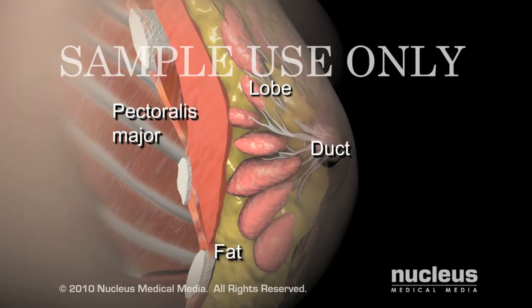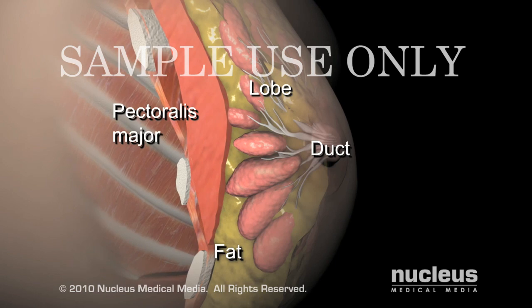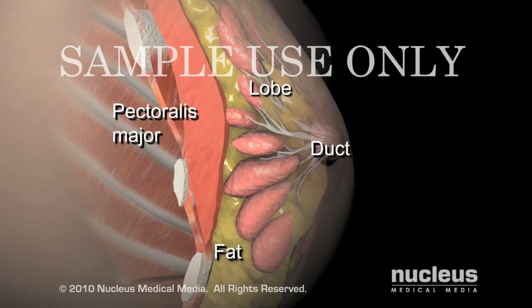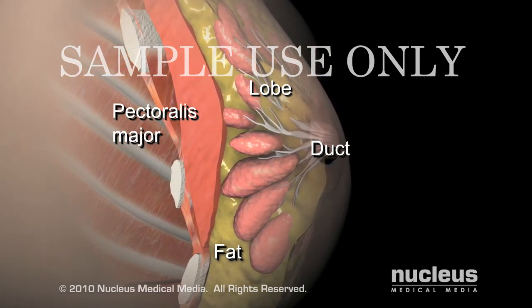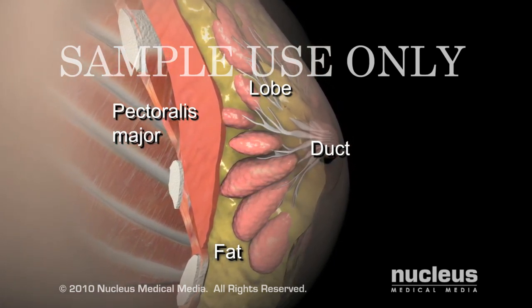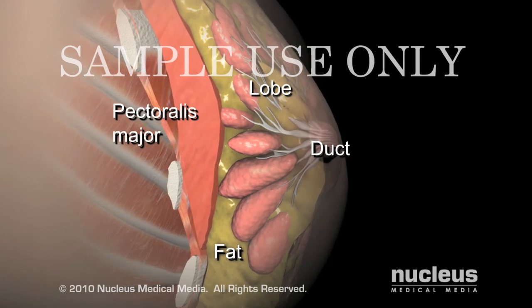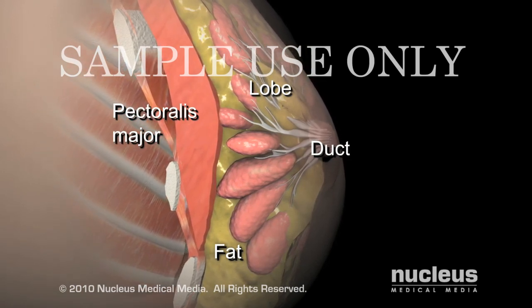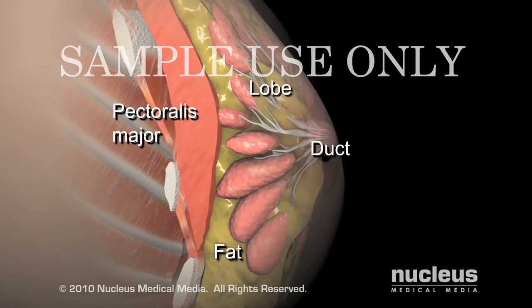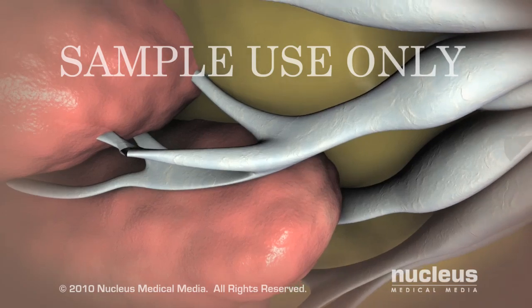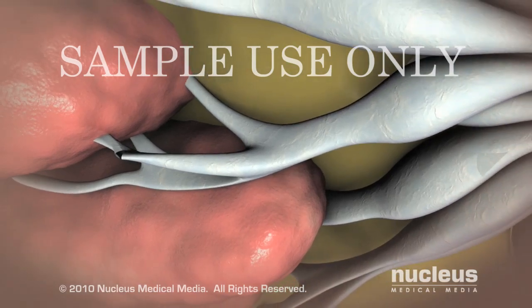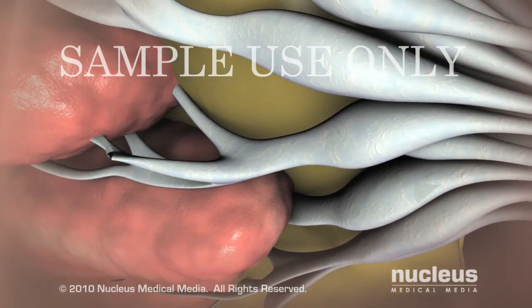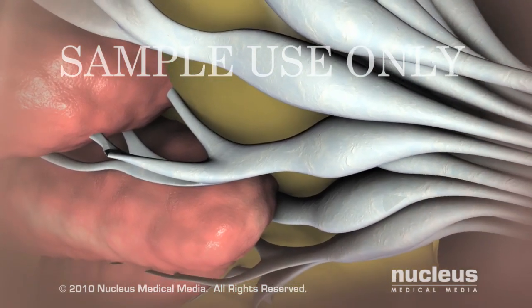Each breast is made up of lobes, lobules, and ducts. The lobes consist of smaller lobules that contain groups of tiny milk-producing glands. When a breast is producing milk, it passes through the ducts and into the nipple, where it exits the body.